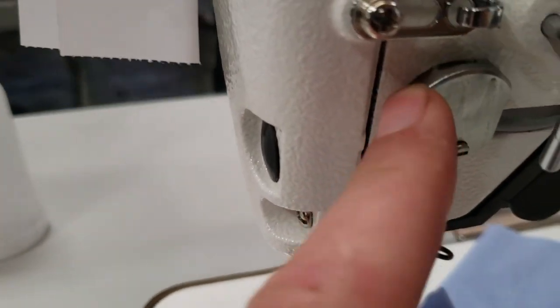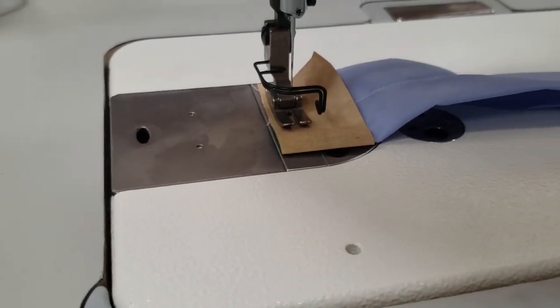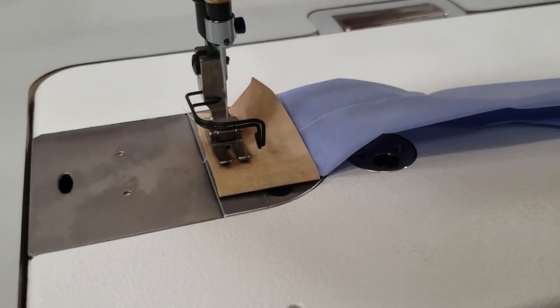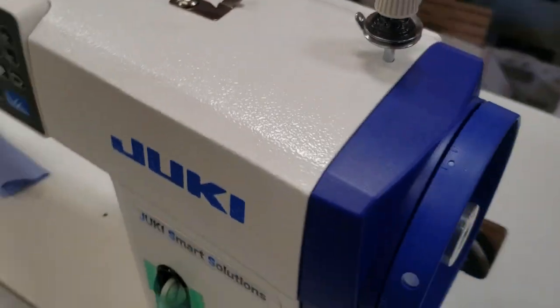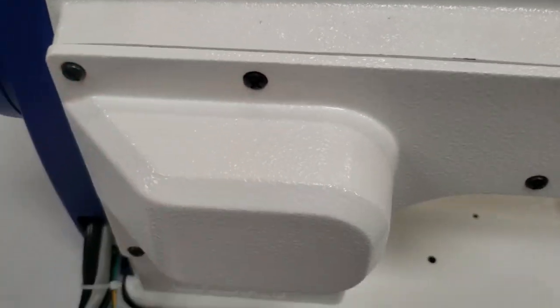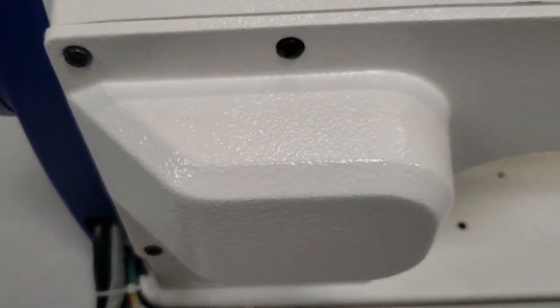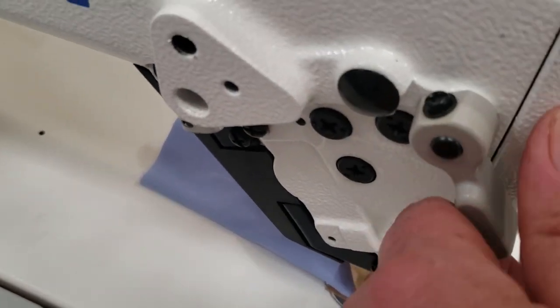Everything on this machine, and I did a video before as well, it's the same as DDL 8700, DDL 5550, 8700-7. The new tech is all the same. Back here is the automatic foot lifter unit that I'm not gonna do anything with, and here is a hand foot lifter right there.